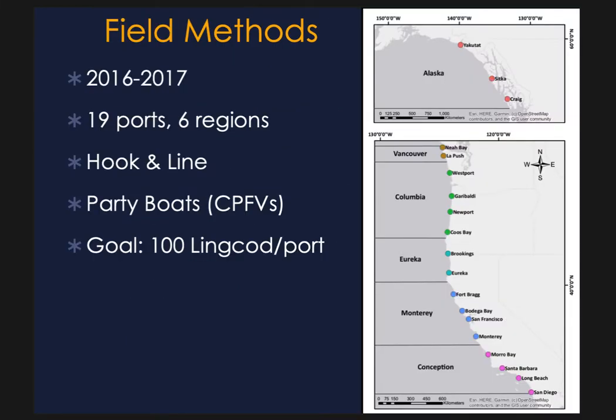Sampling took place primarily during the summer of 2016 and in Alaska in 2017. While we attempted to limit seasonal variation for the bulk of our samples, some consideration must be taken into account during comparisons, particularly Alaska, which was sampled in May 2017. We fished out of 19 ports along the US West Coast, which are grouped into six regions that are part of the Pacific Coast Groundfish Fishery Management Plan: Alaska, Vancouver, Columbia, Eureka, Monterey, and Conception. We used hook-and-line fishing gear and fished from chartered party boats, spending over 35 days at sea.